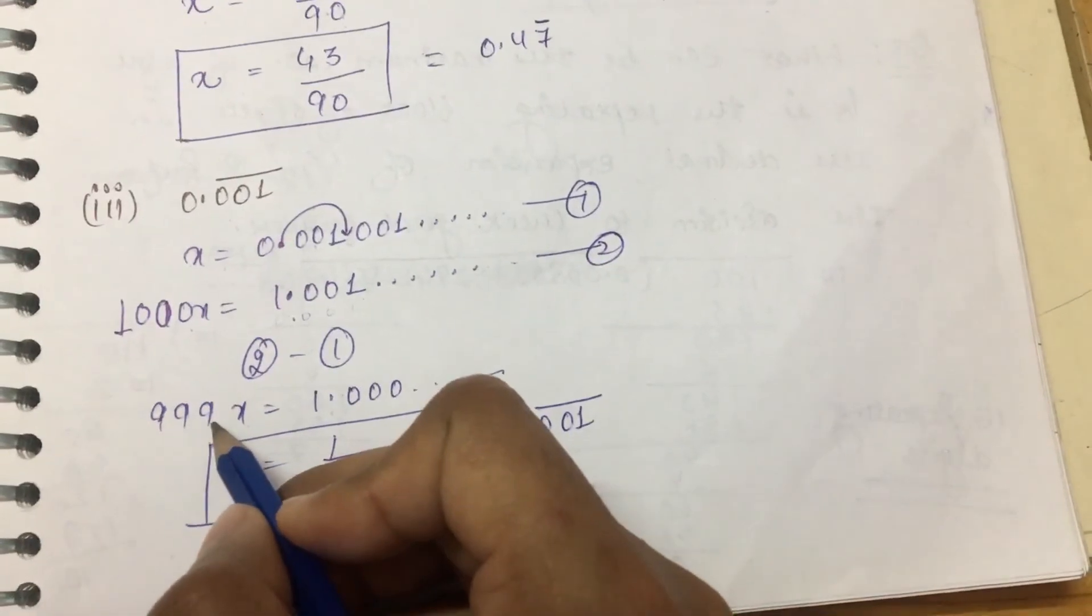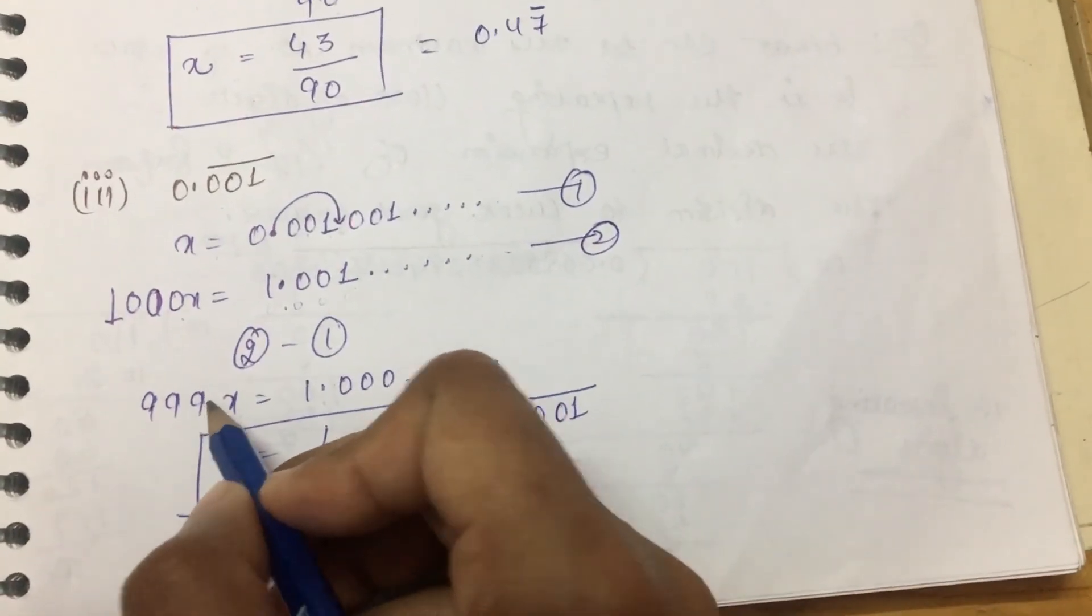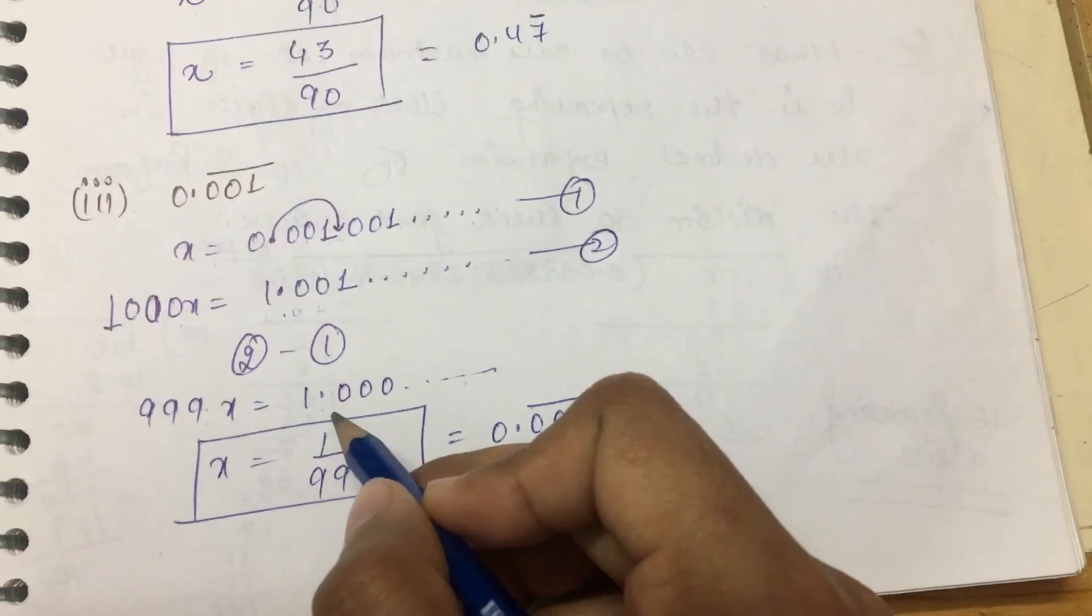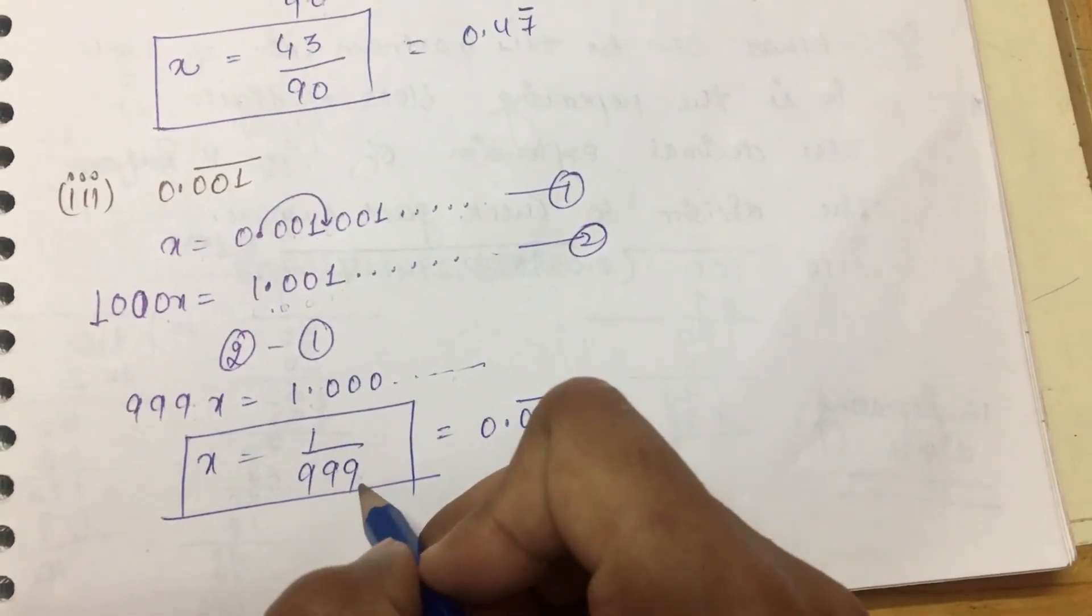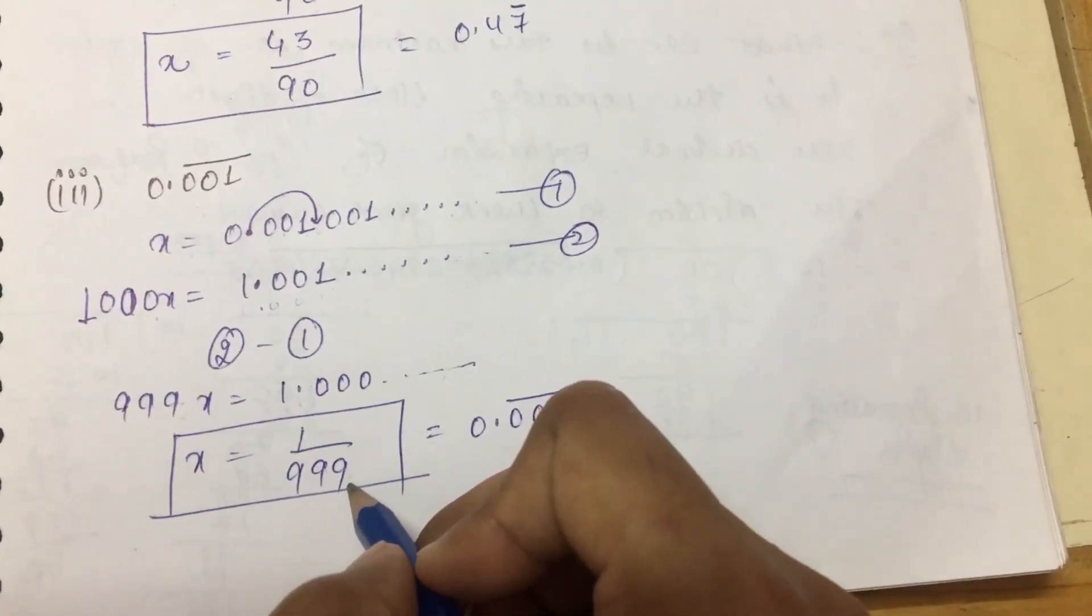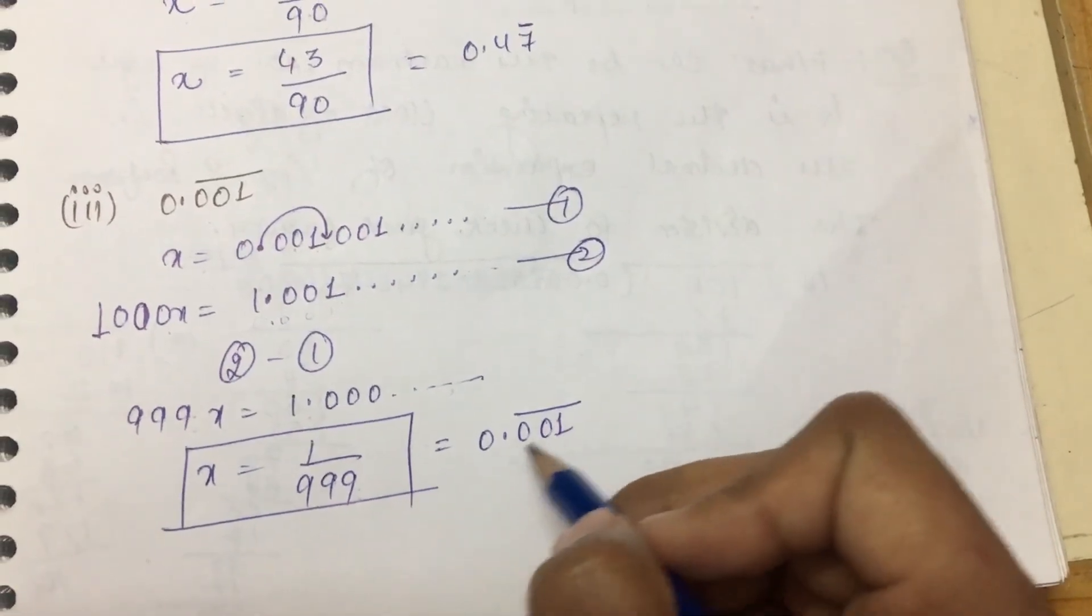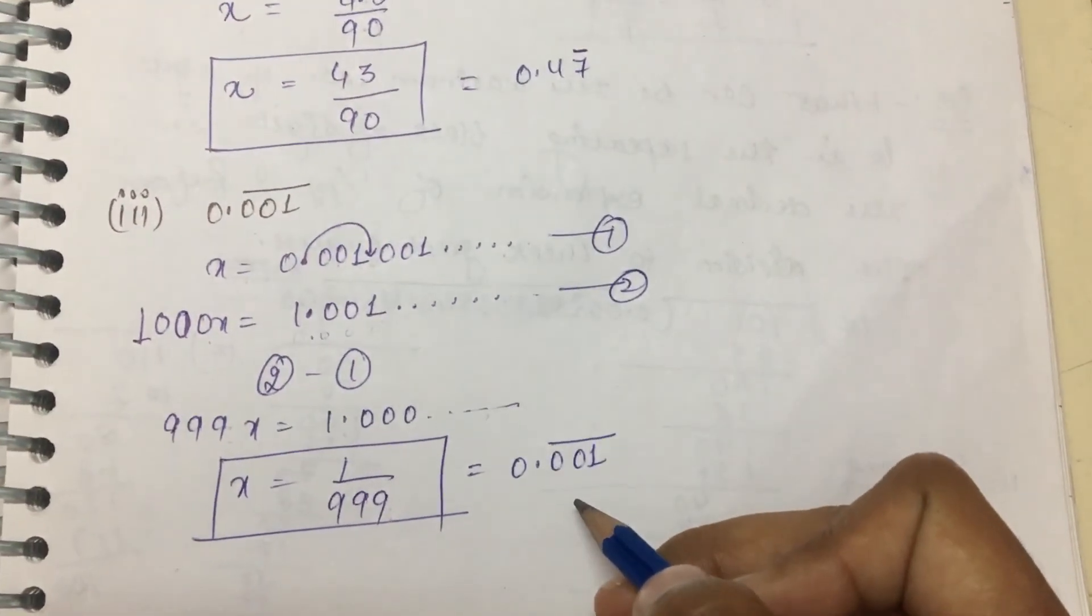So 999x equals 1. x equals 1 divided by 999, which is 1 upon 999. This is the required answer in p by q form. That's it. Thank you.